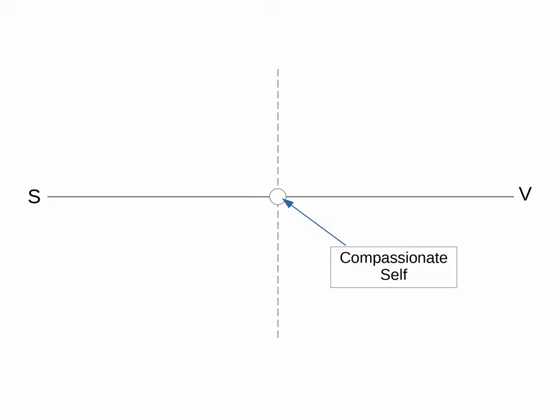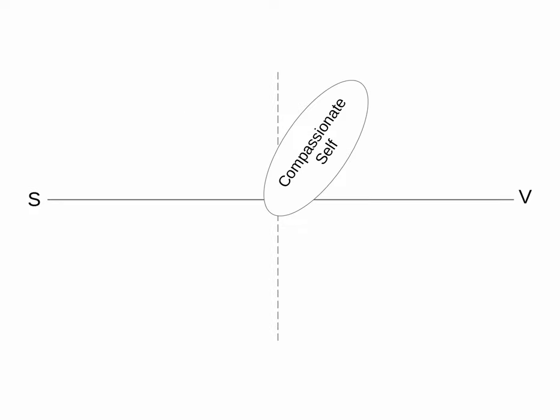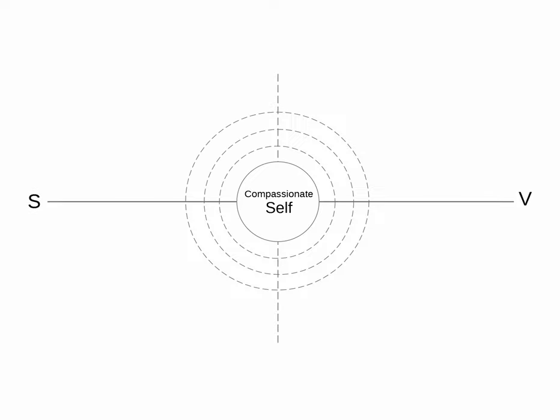At first, our compassionate self may seem very small, especially compared to our critical self. We may have a much easier time extending compassion in certain directions or toward certain types of experiences, but not others. Over time, we can work to strengthen and expand our compassionate self so that it encompasses the matrix and comes into contact with each quadrant equally.